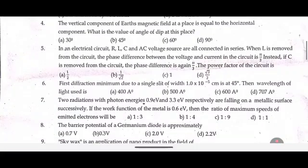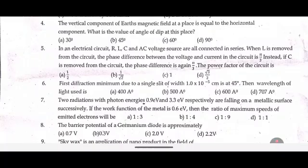Fifth one: In an electrical circuit, R, L, C and AC voltage sources are all connected in series. When L is removed from the circuit, the phase difference between the voltage and current in the circuit is pi by 3. If C is removed from the circuit, the phase difference is pi by 3 again. The power factor of the circuit is dash.